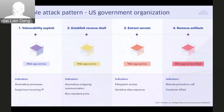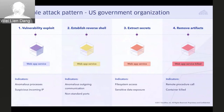On this next slide, another attack pattern we work to address — in this case with a US government organization — is one that targets secrets. Going from left to right, it begins with a vulnerability exploit. Even if the container platform has been hardened, running containers still have vulnerabilities, and new ones are being discovered all the time. Indicators of this type of exploit may include anomalous processes or communication originating from a particular IP.